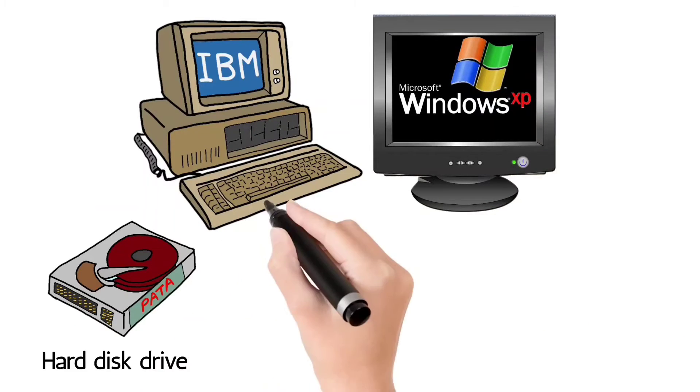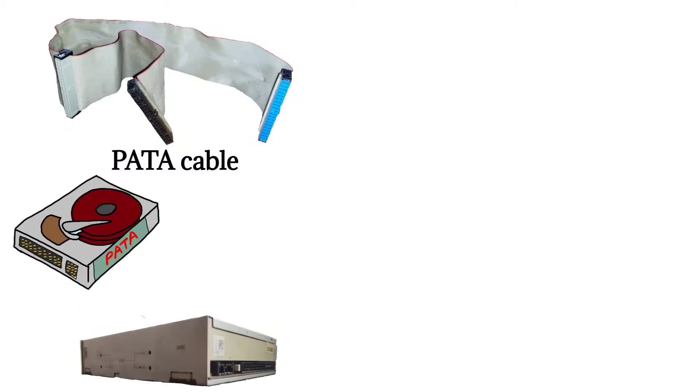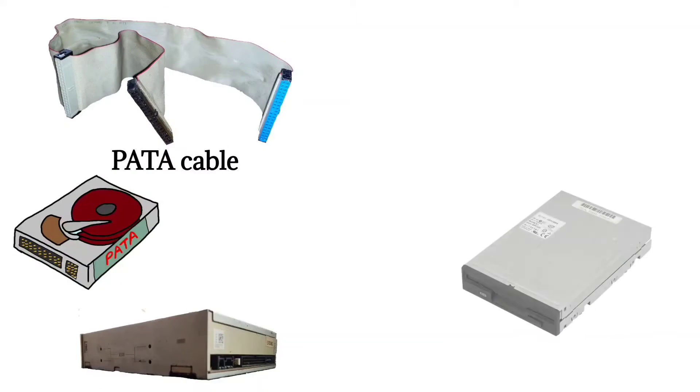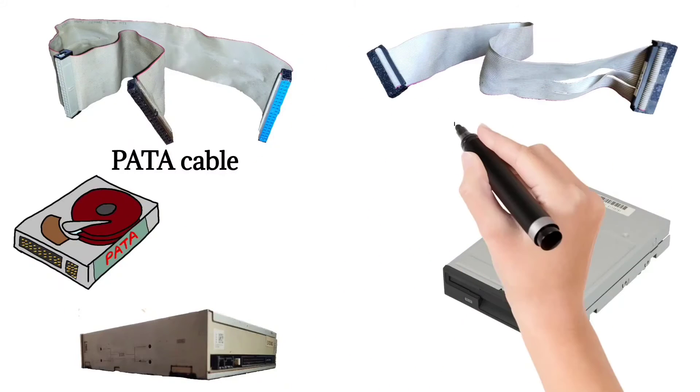In older computers, PATA hard disk drives, optical disk drives, and floppy disk drives were used as a medium of storage. PATA cables were used for hard drives and optical disk drives, but for floppy disk drives a different kind of cable was used called floppy cable.